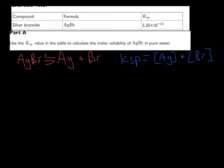So, what do we do? Let's draw it out. So, the KSP, as I said is given, is 5.35 times 10 to the minus 13, right? This equals the concentration of A, or the solubility of Ag multiplied by Br.